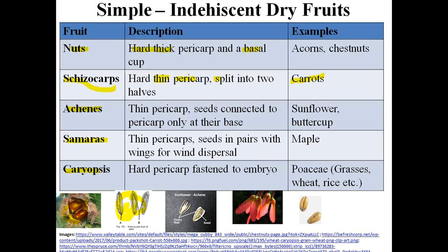The third indehiscent dry fruit type is achenes. They also have a thin pericarp, but the seeds are attached to the pericarp at their base. Examples are sunflower and buttercup.